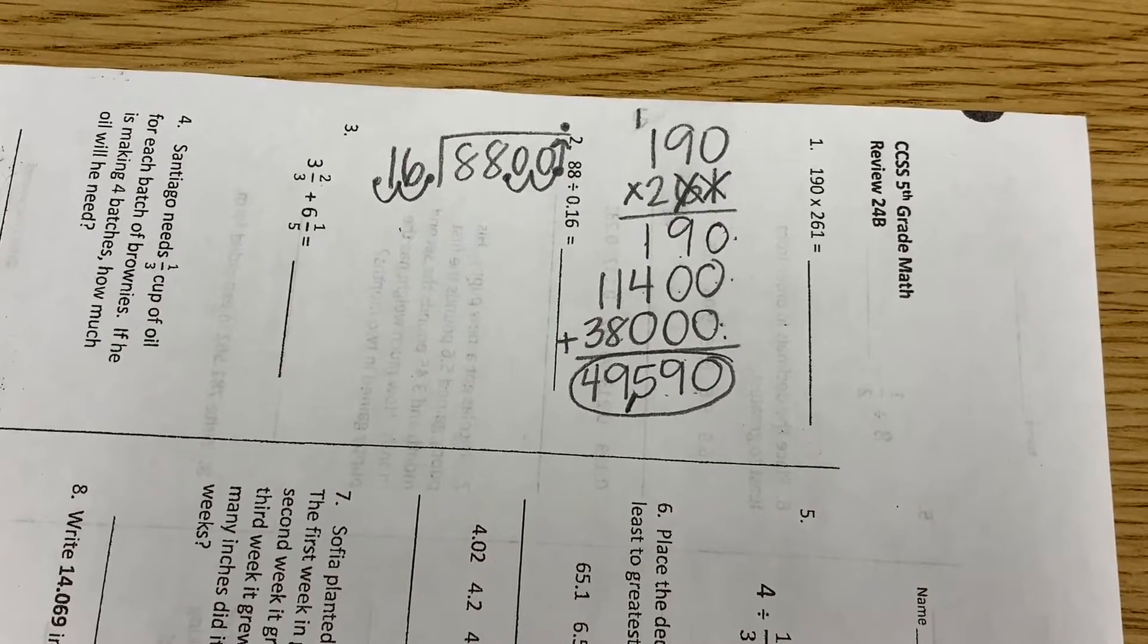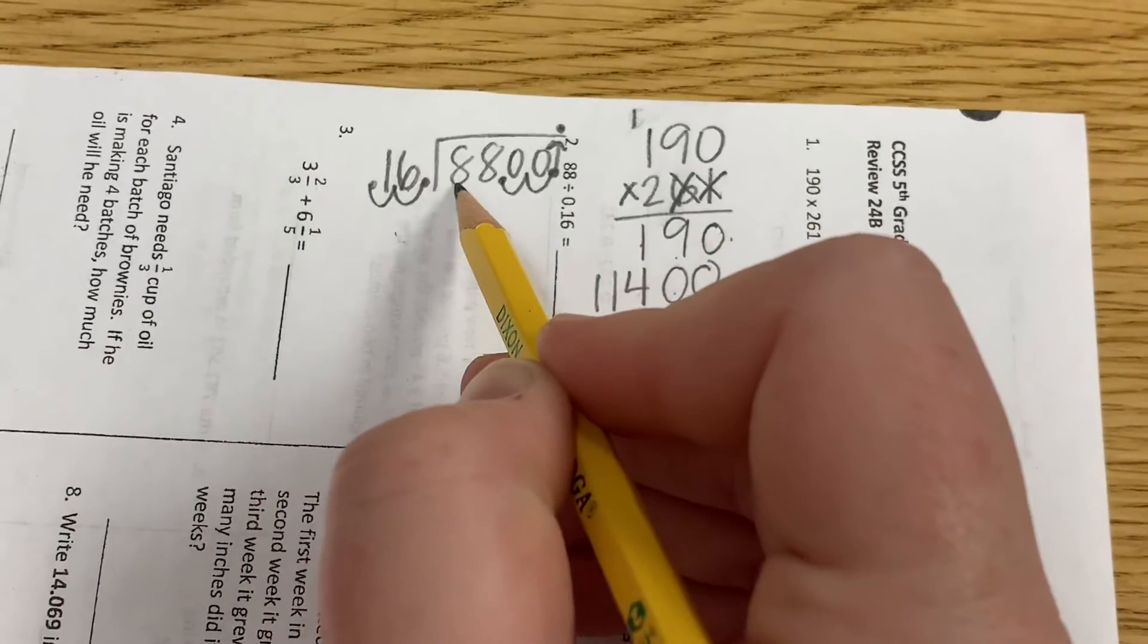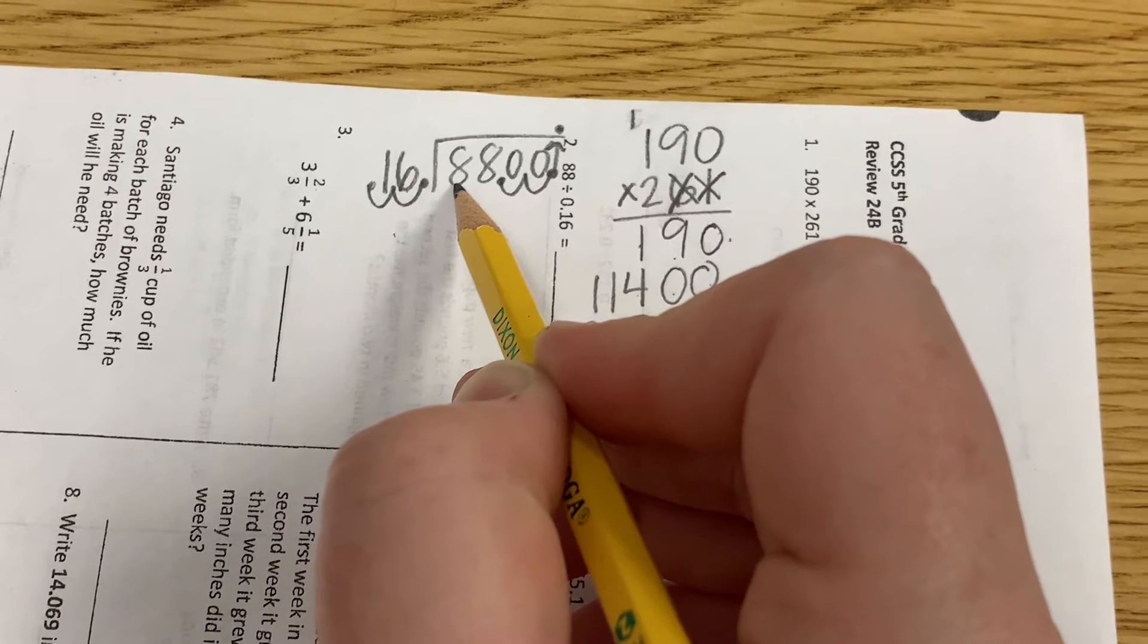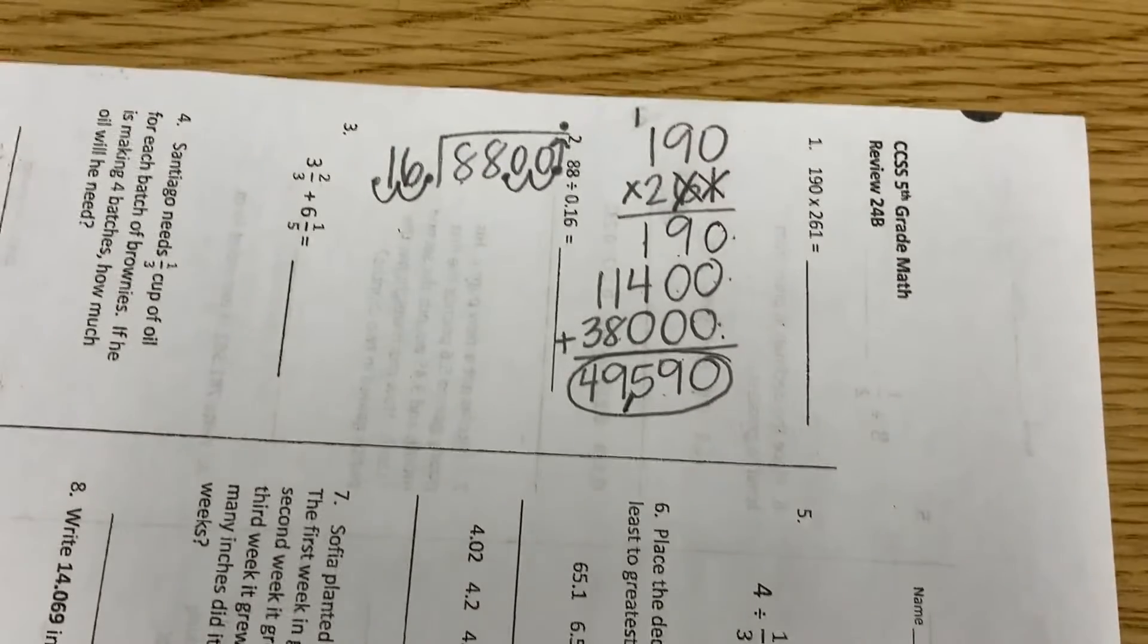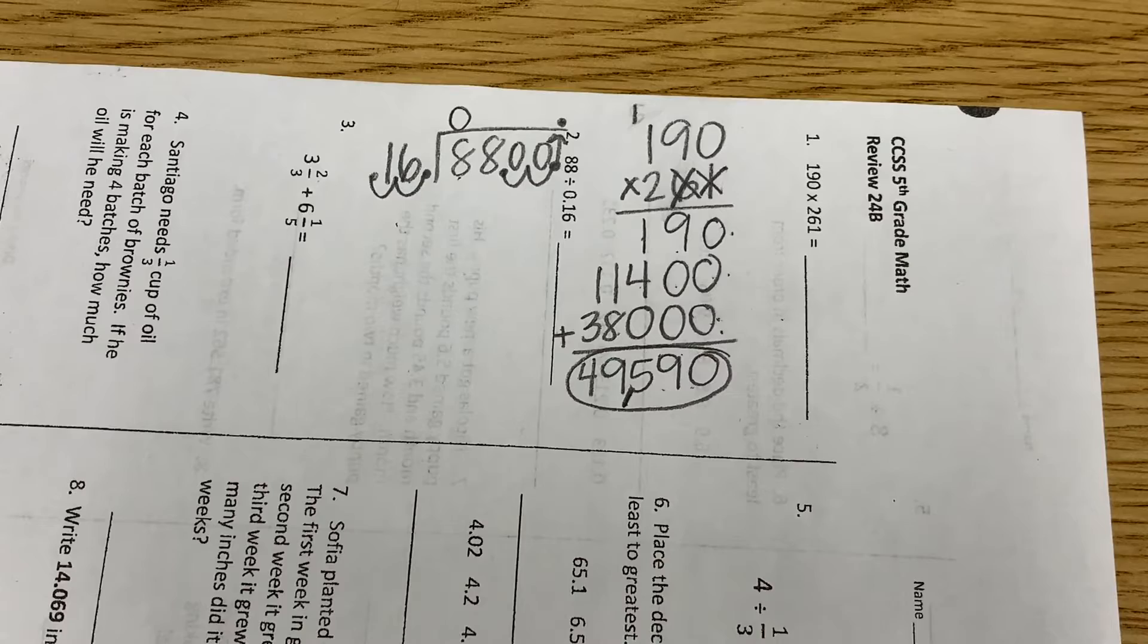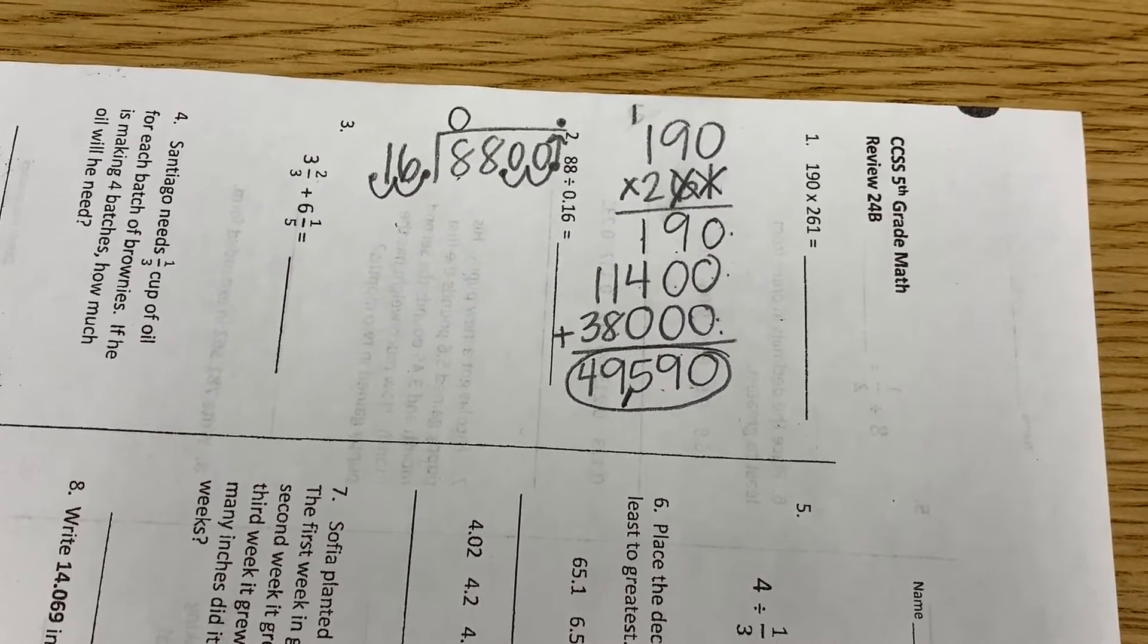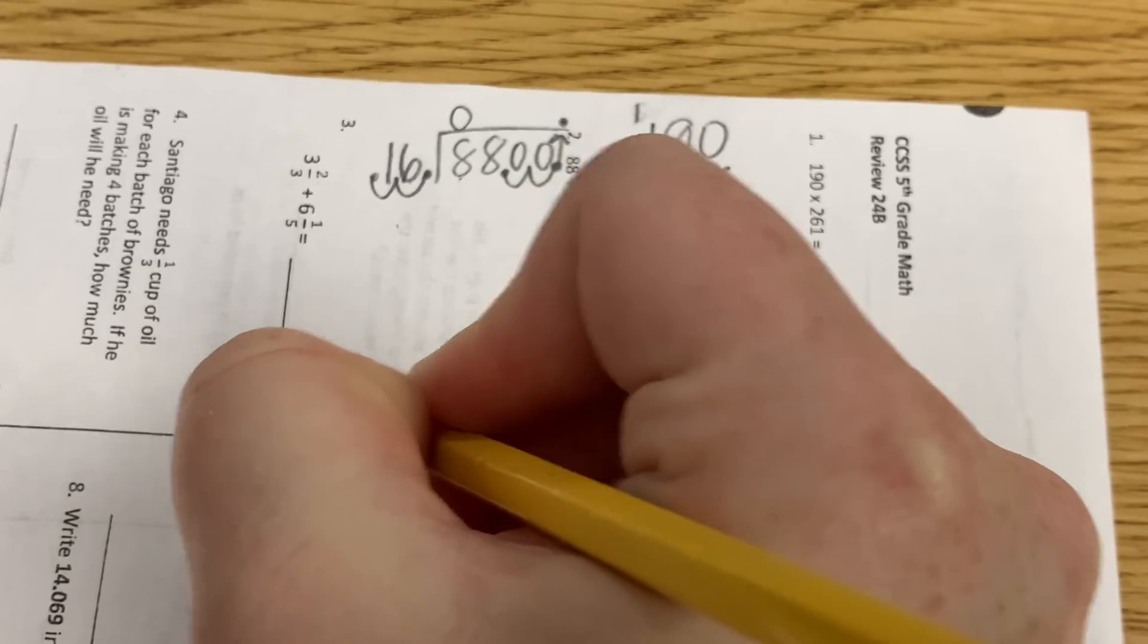Now again, do not make this mistake. Can 16 go into 8? No it cannot. What goes on top of the 8? A zero. 16 cannot go into 8 because why? Because it's too small. 8 is too small. So a zero goes on top. Now can 16 go into 88? Yes. How many times can 16 go into 88, Colt? Five times. Five times? Let's check and see.